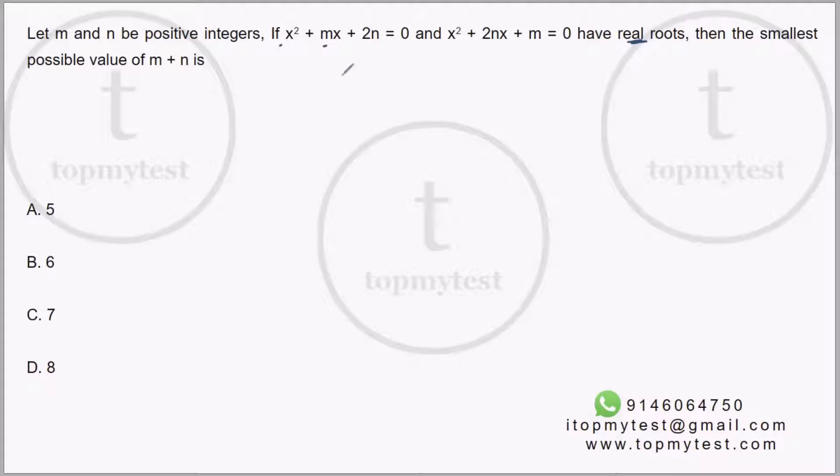If they have real roots, the discriminant for both of them should be greater than or equal to zero. That's the starting point. You need to find what is the smallest possible value of m + n.